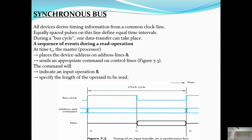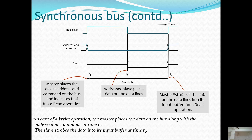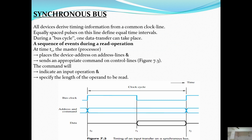During a read operation, at time T0 the master — that is, the processor — places the device address on the address lines and sends an appropriate command on the control lines. The command indicates the input operation, specifically the length of the operand to be read. This describes the timing of an input transfer in a synchronous bus structure.